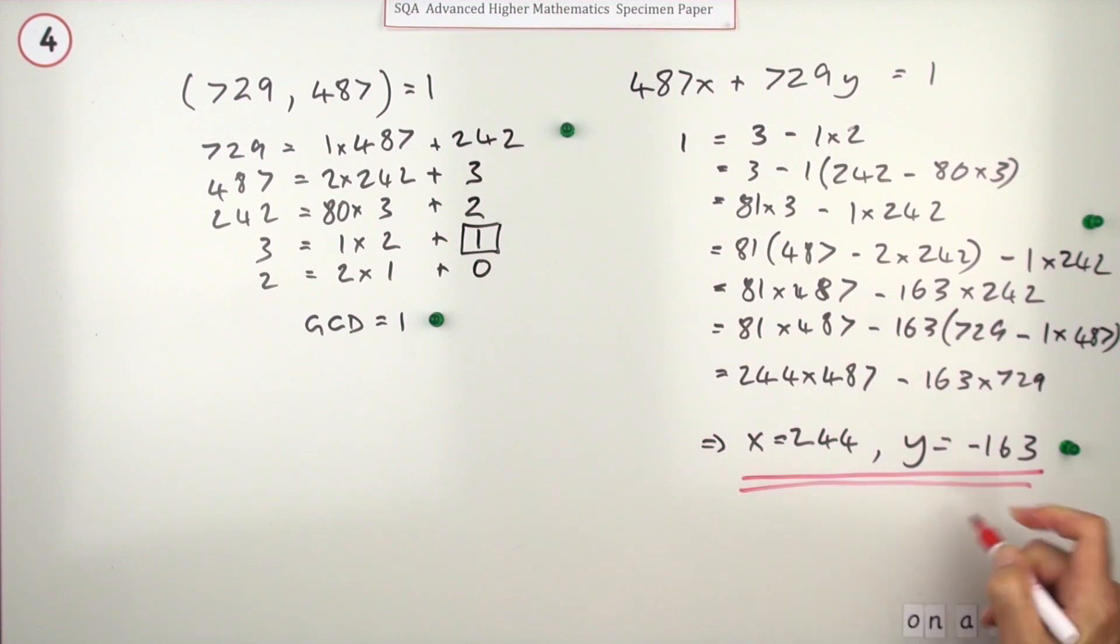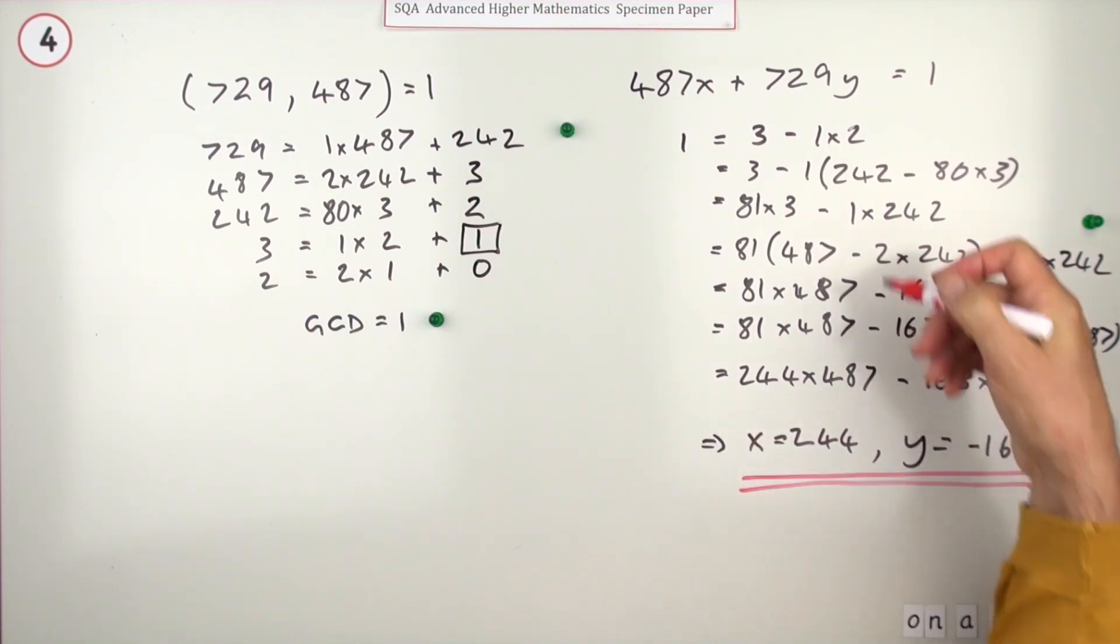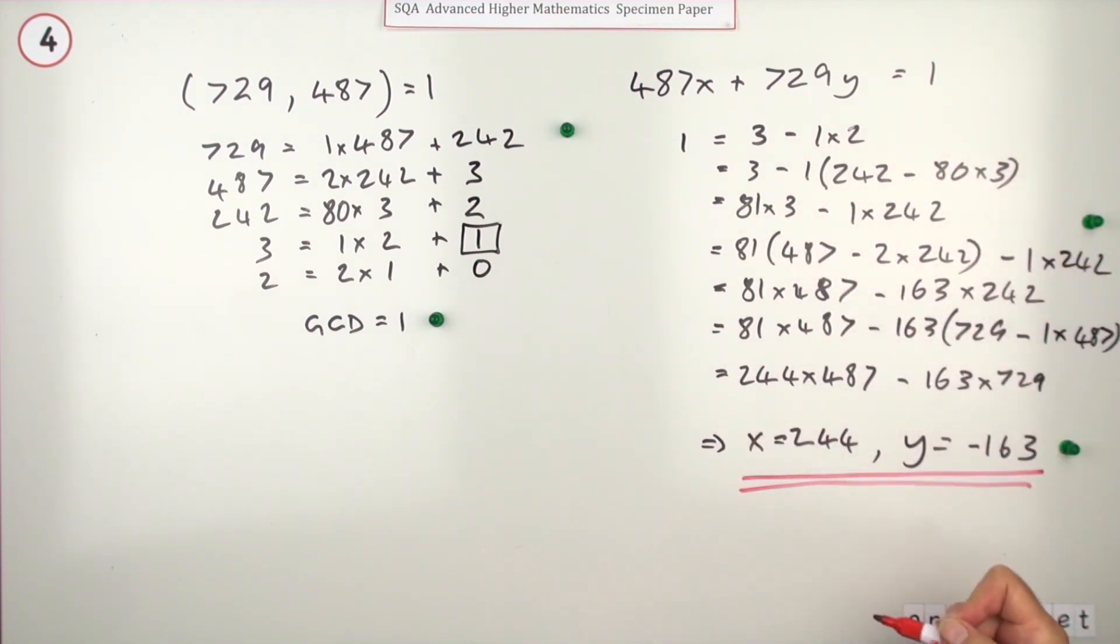That gives you the last mark. Of course, one thing you do when you get to this line, because there's all these little bits of arithmetic, is quickly put that in your calculator and check that it comes to 1. If it doesn't, you just have to go back and find your mistake.